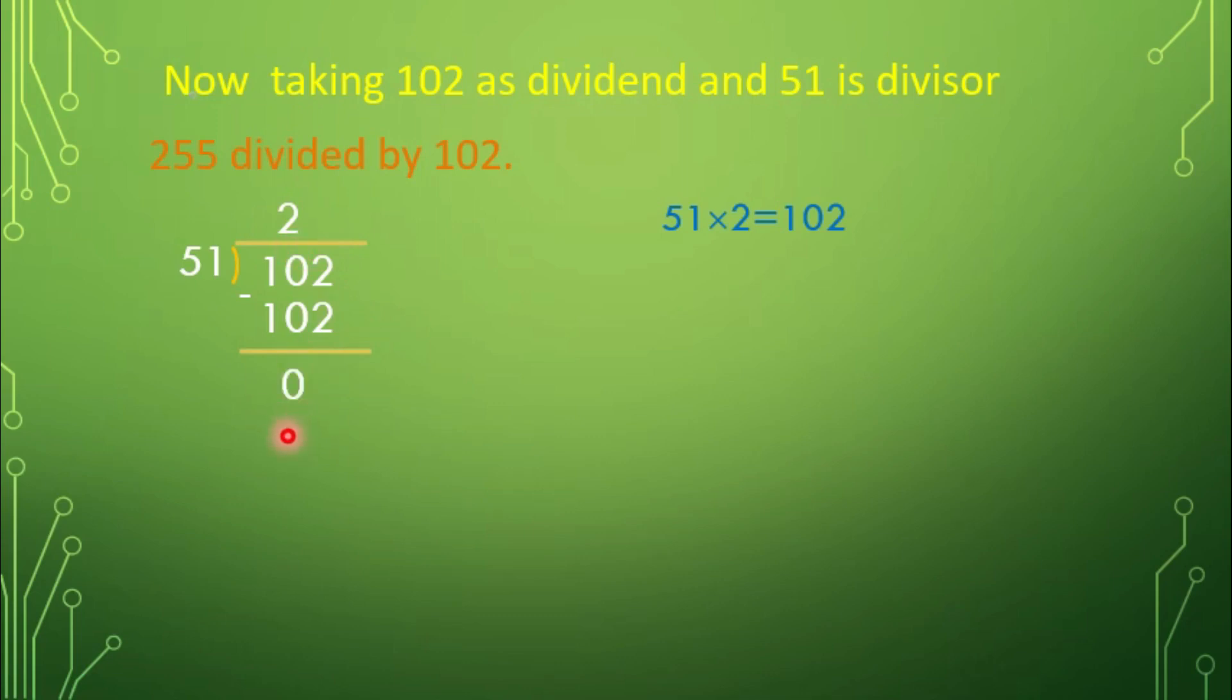See, now we got remainder 0. So, now we should stop the division because we got the remainder as 0. Since in the last step the divisor is 51, using Euclid's Division Lemma, we can write it as 102 equals 51 into 2 plus 0.